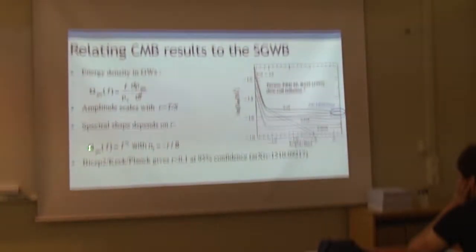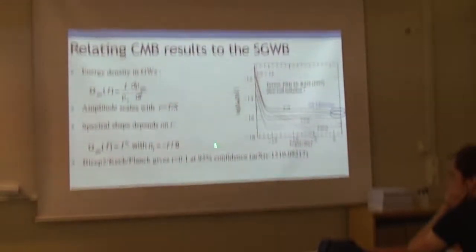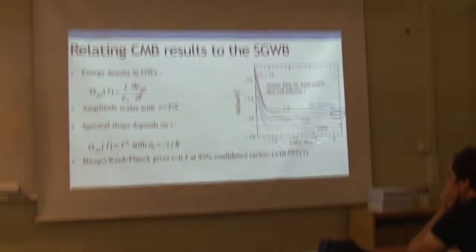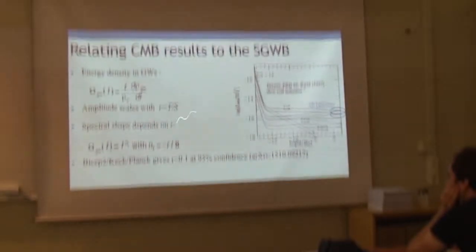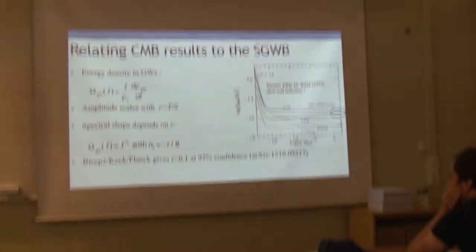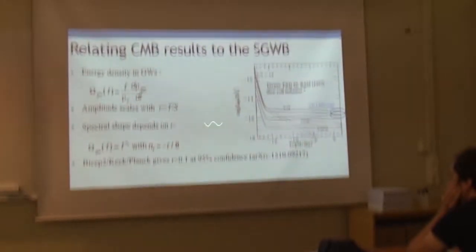Omega — the energy density parameter — depends not just on amplitude but also on its spectral shape. Looking at omega as a function of frequency, unfortunately there is a blue tilt, meaning that omega is decreasing with frequency — not too much, but it is decreasing. So this parameter is very small in the frequency range of LIGO and Virgo, and really out of reach of the detector sensitivity at the moment.